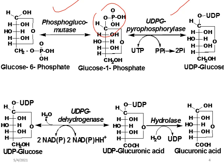The next reaction is that UDP glucose is oxidized to glucuronic acid, catalyzed by the enzyme UDP glucose dehydrogenase. The coenzyme accepting the hydrogen atom can be either NAD or NADP, which is converted to NADH. Then, this UDP glucuronic acid is reduced to L-gulonate by the NADPH-dependent enzyme gulonate dehydrogenase.